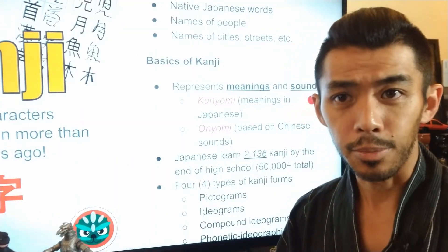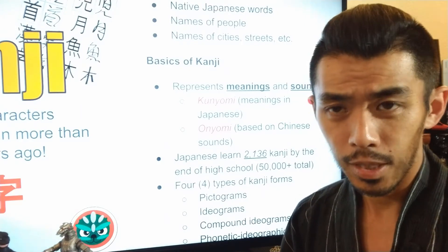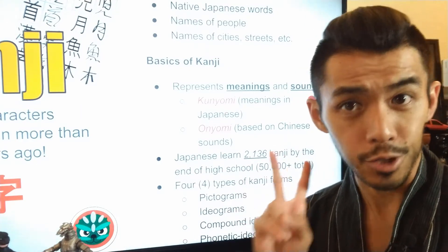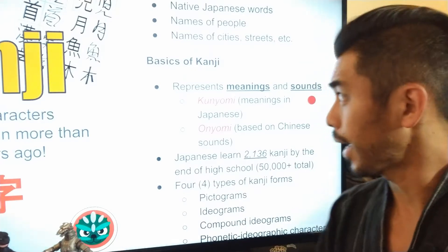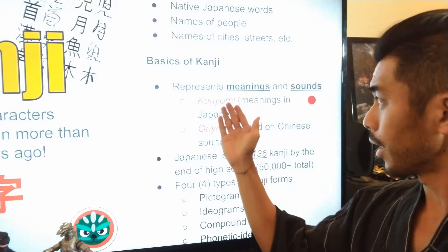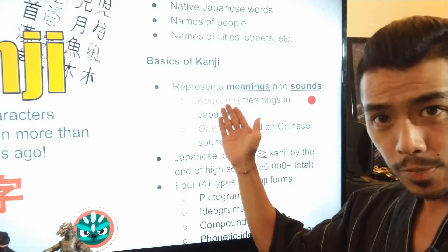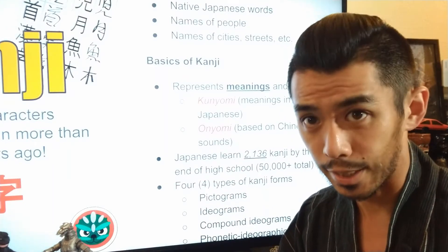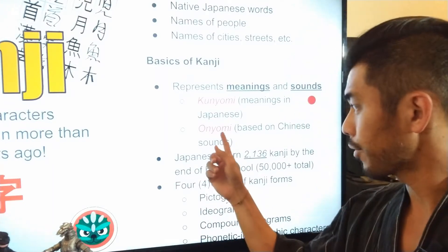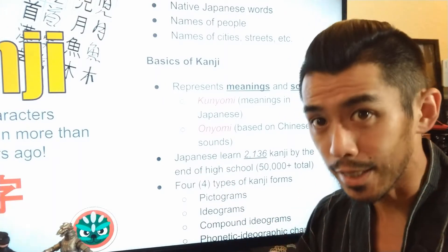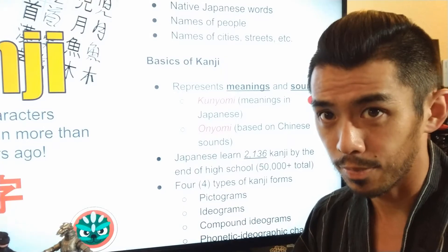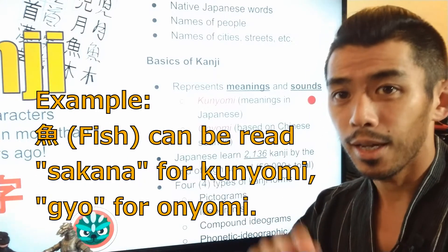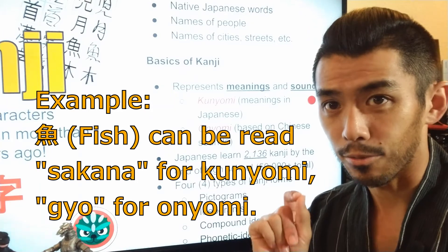Let's talk about some basics of kanji. Kanji actually represents two different sounds. The first is kunyomi, which is the traditional Japanese way of reading it, and then we have onyomi, which is based off of Chinese pronunciation. So there's kunyomi, the Japanese reading, and onyomi, the Chinese reading.